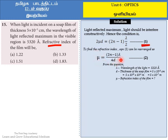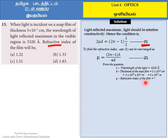In the expression, λ is the wavelength of light given in the question as 5,320 angstrom units, and D is the thickness of the film given as 5 × 10⁻⁵ cm, which can be converted to 5 × 10⁻⁷ meters. μ is the refractive index of the film that we need to find.